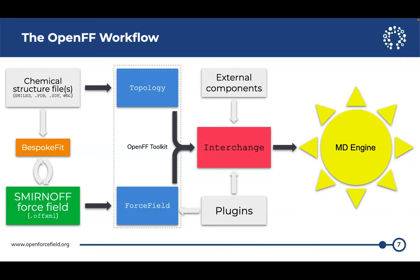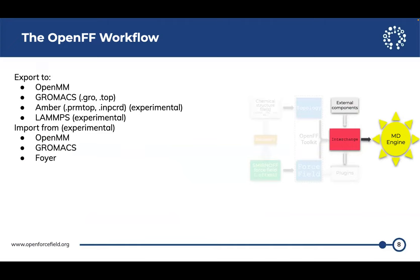We can use interchange to get output files suitable for simulation in a number of MD engines. Right now we can export to OpenMM and GROMACS — we're pretty confident about both of those. We have rudimentary support for Amber and LAMMPS. We're also experimenting with importing components from these systems — basically taking things that were parameterized elsewhere, and if the force fields are compatible (that's a big if), we're building out experimental functionality to combine them.